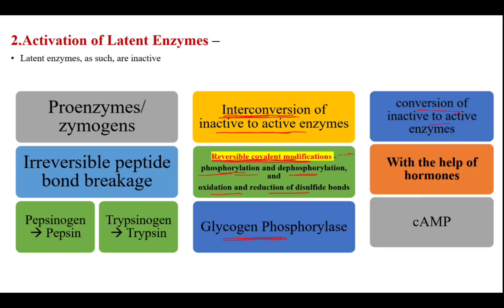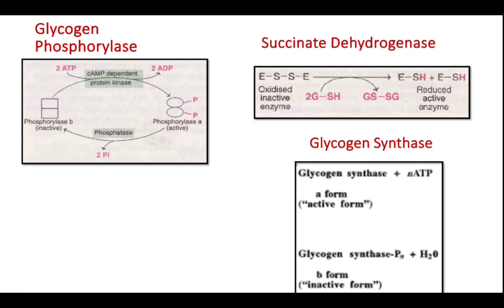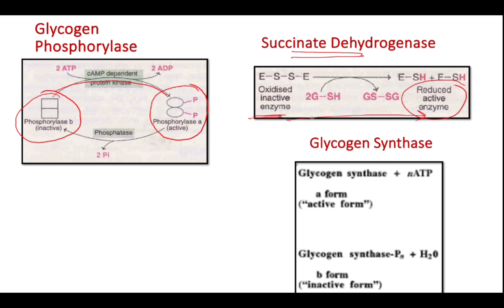Conversion of inactive to active enzymes also occurs with the help of hormones — for example, cyclic AMP is actively involved in the activation of these enzymes. Methods of activation of latent enzymes include: irreversible peptide bond breakage, reversible covalent modification, and hormones. Glycogen phosphorylase undergoes activation by phosphorylation. Succinate dehydrogenase becomes active when reduced — the oxidized form is inactive. Glycogen synthase is active as such, but becomes inactive when phosphorylated.